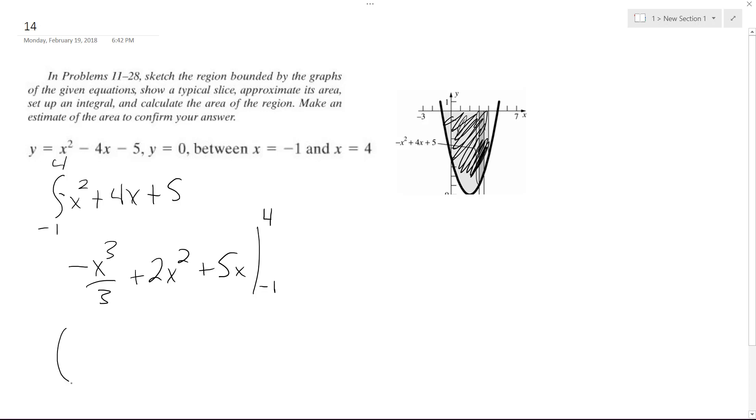Alright, so what happens here is we get negative 64 over 3 plus, that's 32, plus 4 times 5 is 20. And then we get 1 third because it's negative 1 third times negative 1, and then plus 2 and then minus 5.